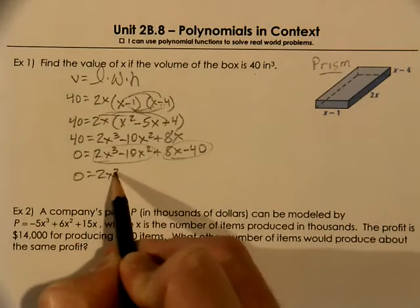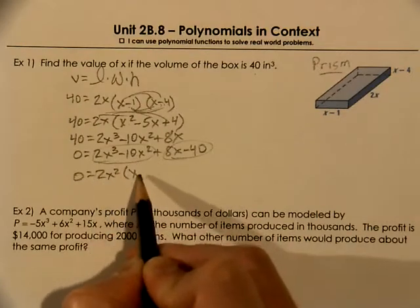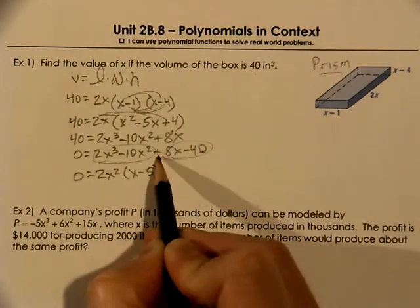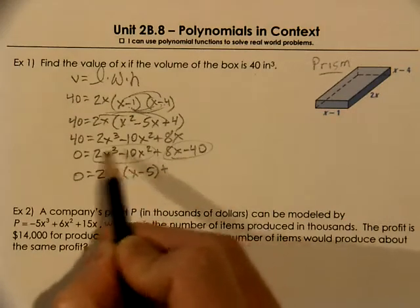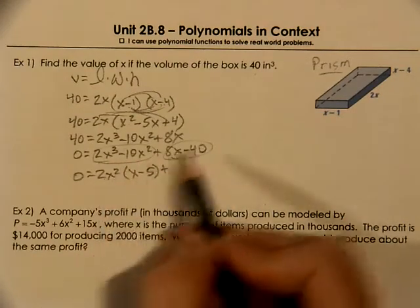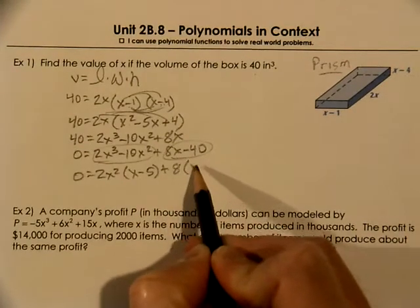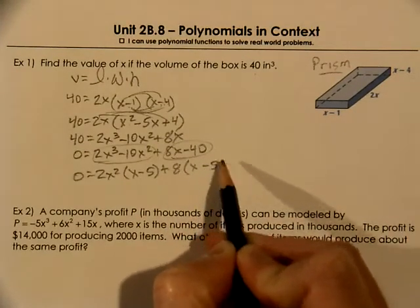So right now we have an x minus 5 in the parentheses when we pulled the GCF out of the first group. Here we can pull an 8 out and we're left with x minus 5.